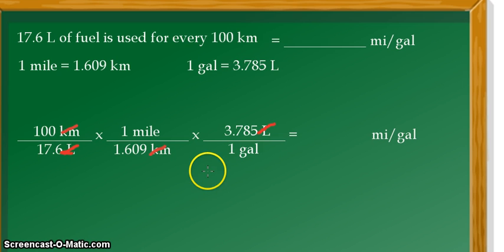Alright, so there we have it. We are only now left with the unit miles per gallon, which is our desired unit. All we need to do now is do the calculation. And after doing the calculation, it gives us that the answer is 13.36 miles per gallon.